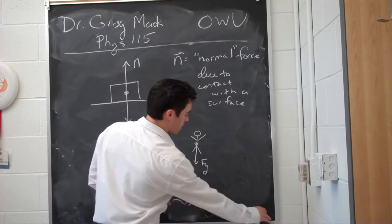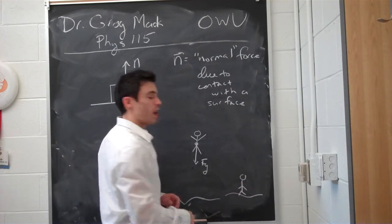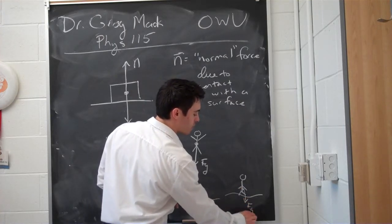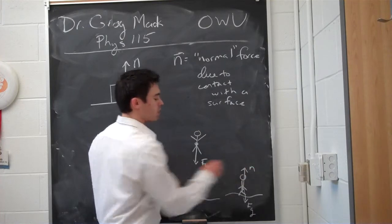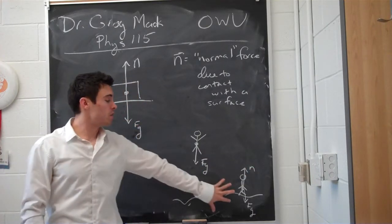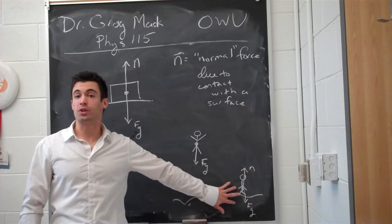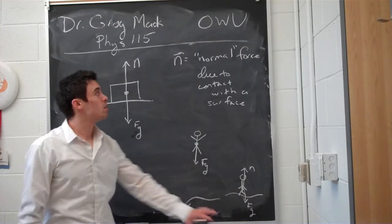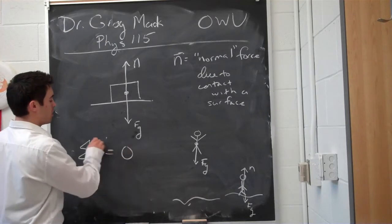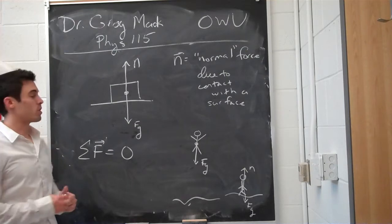If the person is instead in contact with the floor, that person will have the force of gravity downward and also the normal force from the ground pushing up on the person, so that the person is not actually moving if they're just standing there. Because there's no acceleration, the forces are equal — the sum of the forces in that case would be 0, so the force of gravity equals the normal force.